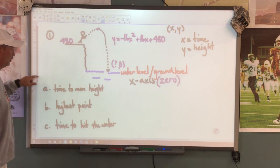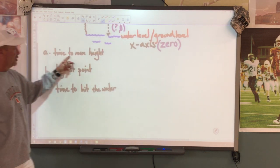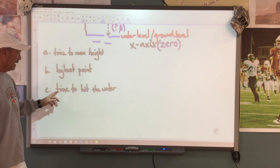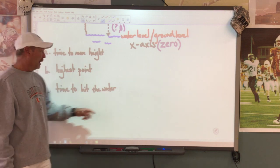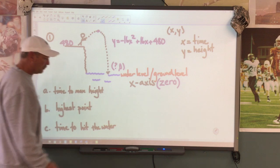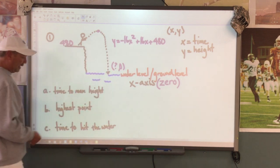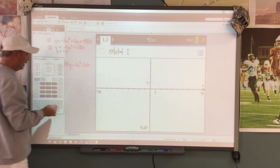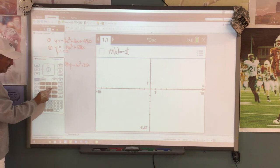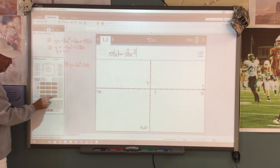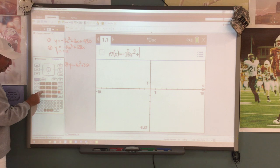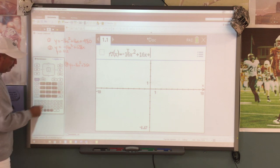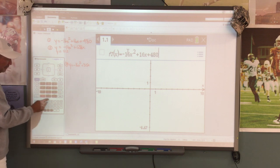On this question, we're going to ask: time to the maximum height, what is the maximum height, and time to where he hits the water. Let's go to our calculator. I've listed the equation here. I'm going to type in negative 16x squared plus my initial velocity of 16x plus my initial height of 480, and we're going to hit enter.